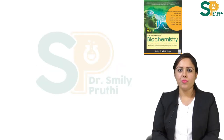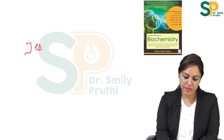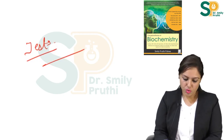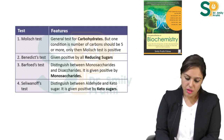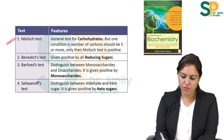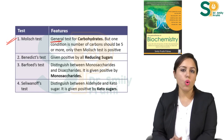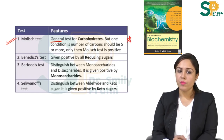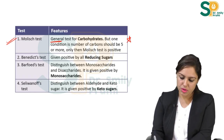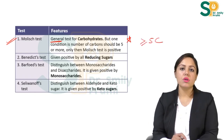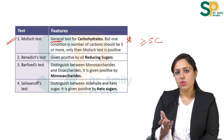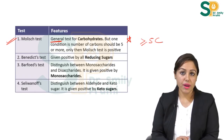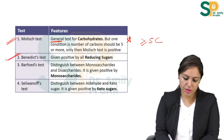Welcome to this video on biochemical tests given by carbohydrates. First is the Molisch test, which is a general test for all carbohydrates. There is one condition: the number of carbons should be five or more. Only then will Molisch be positive. If a carbohydrate has less than five carbons, then Molisch will be negative.